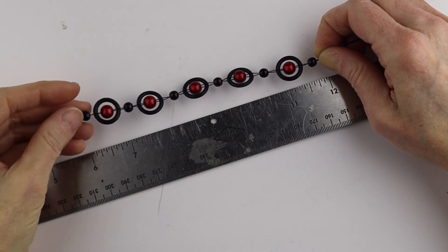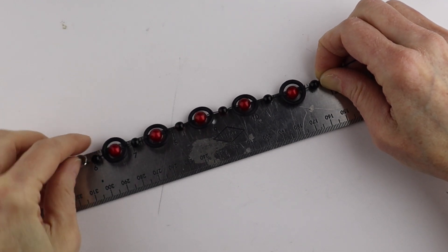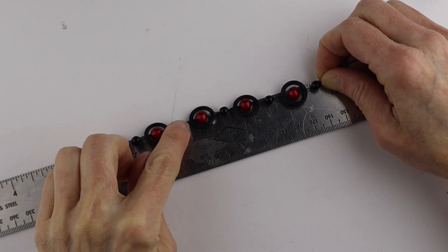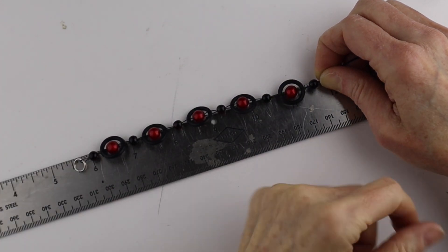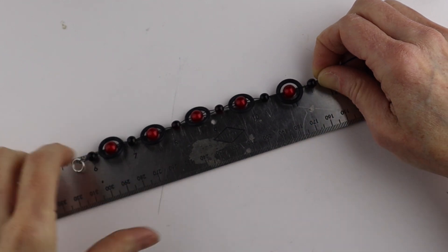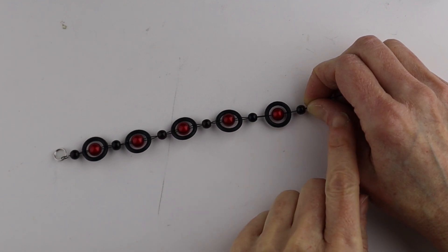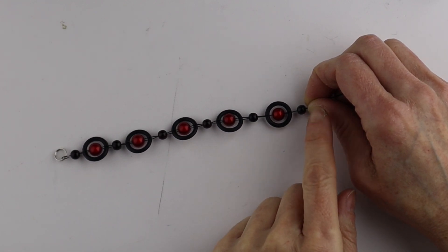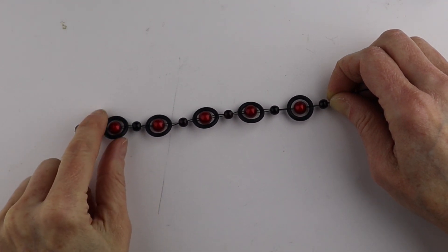Once you have enough of the pattern, place it on a ruler to make sure they're about the same distance apart—doesn't have to be perfect. My wrist is tiny, so I can't put another set on. If you need more length, add extra beads or an extender chain.